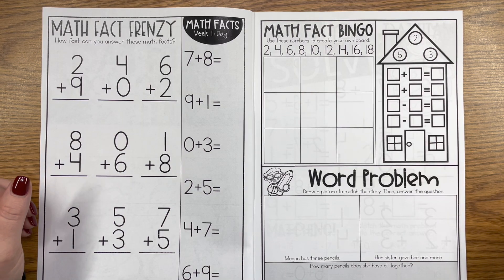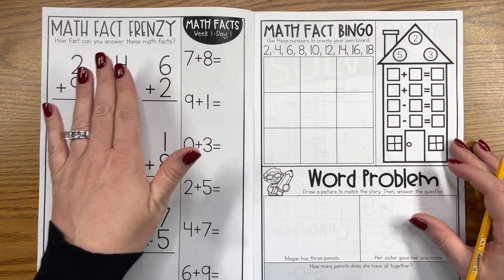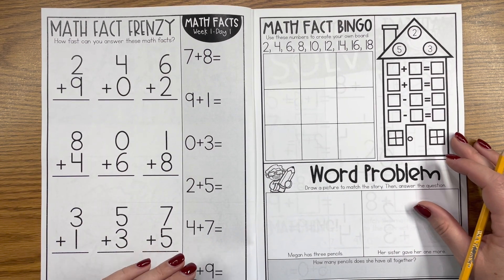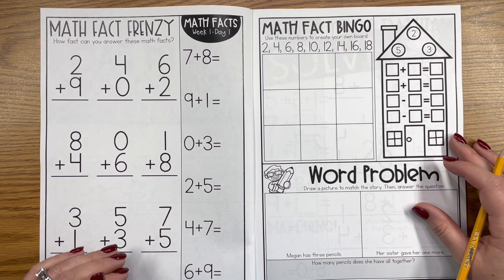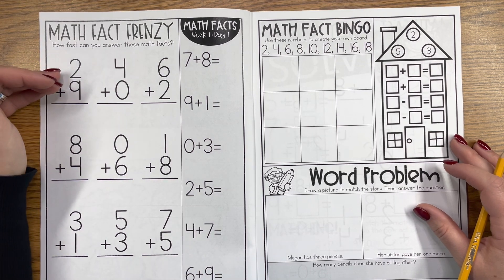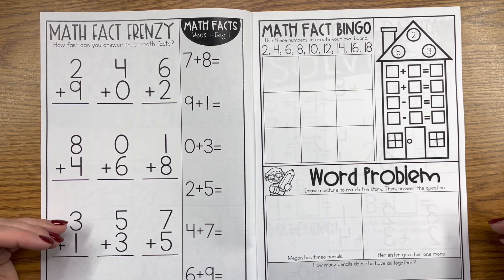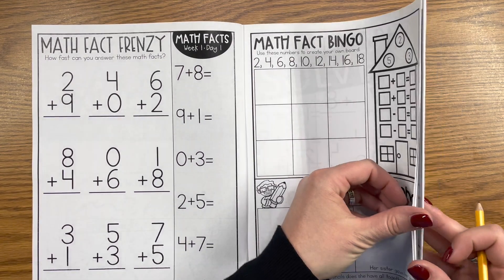I like to use hundreds charts, but you could definitely use number lines or touch points or counting on, or students who like to use their fingers. On this side of the page I like to just give my students the opportunity to use their tools and resources to add, or in later weeks subtract, both horizontally and vertically.